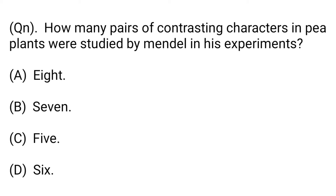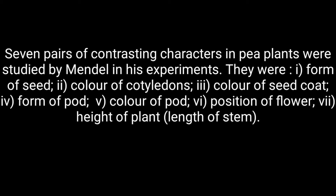Next question: How many pairs of contrasting characters in pea plants were studied by Mendel in his experiments? Option A: 8. Option B: 7. Option C: 5. Option D: 6. Seven pairs of contrasting characters in pea plants were studied by Mendel in his experiments.